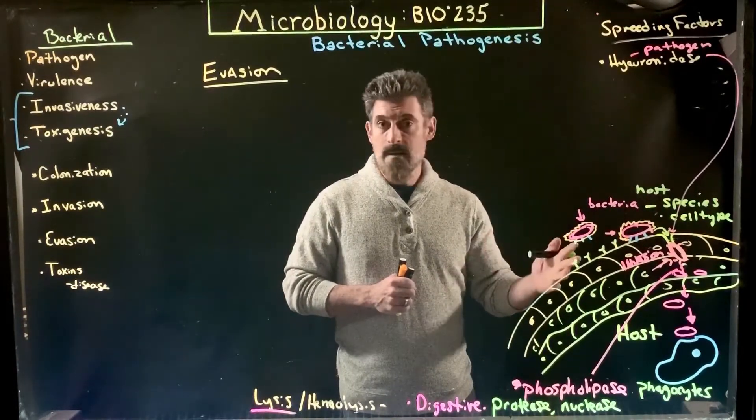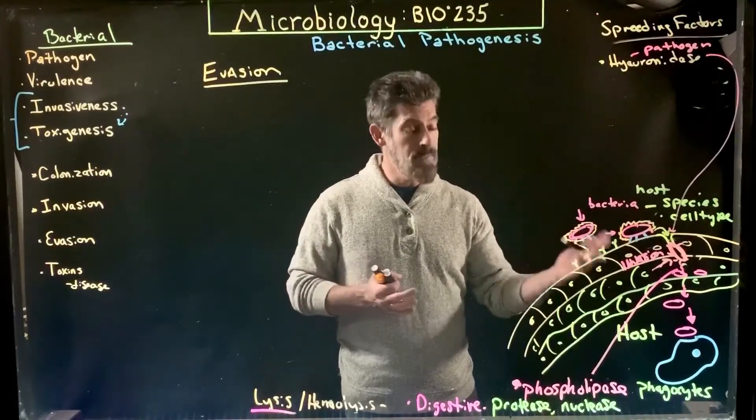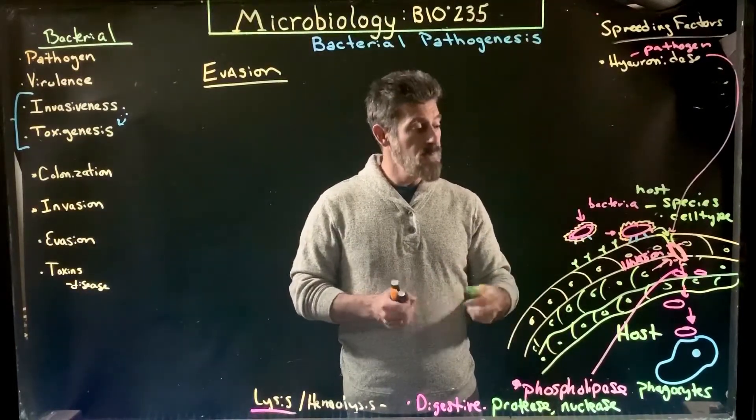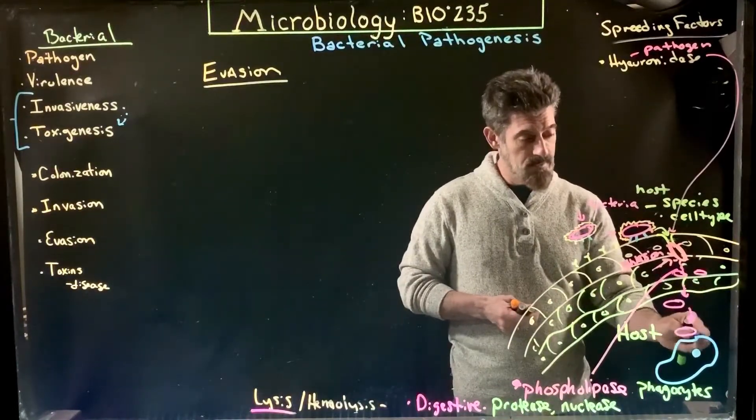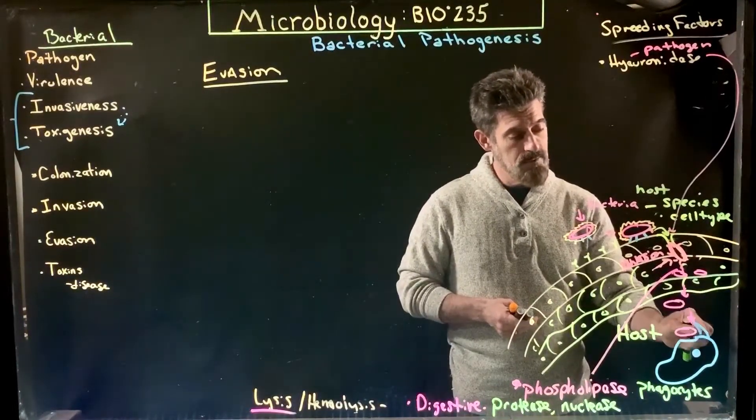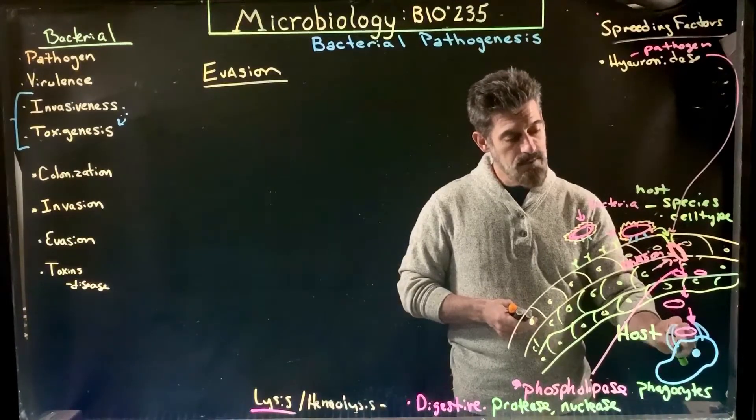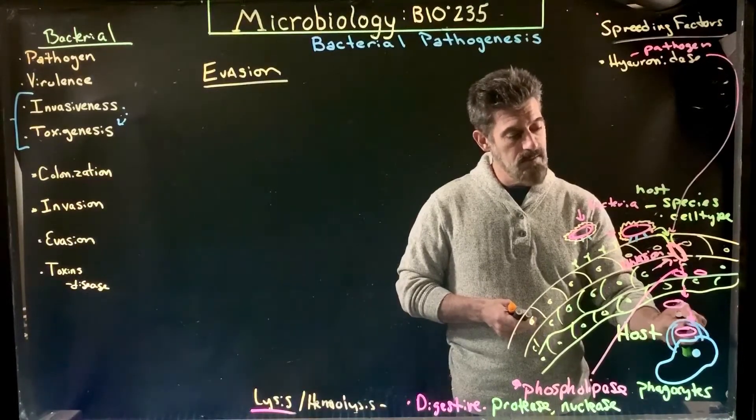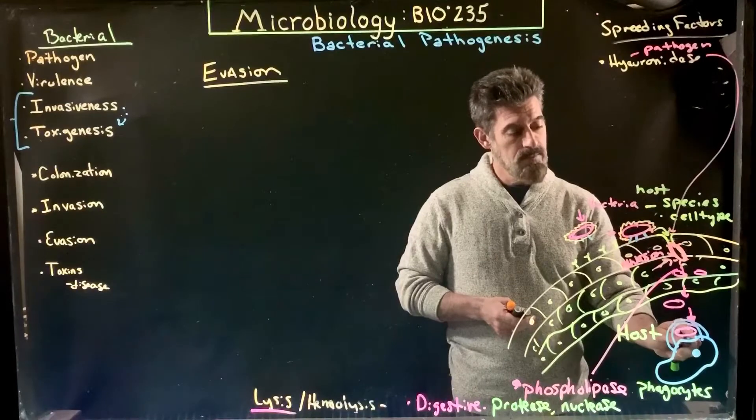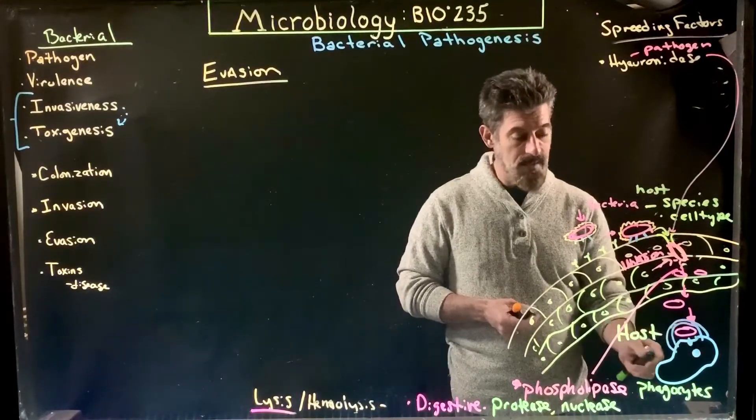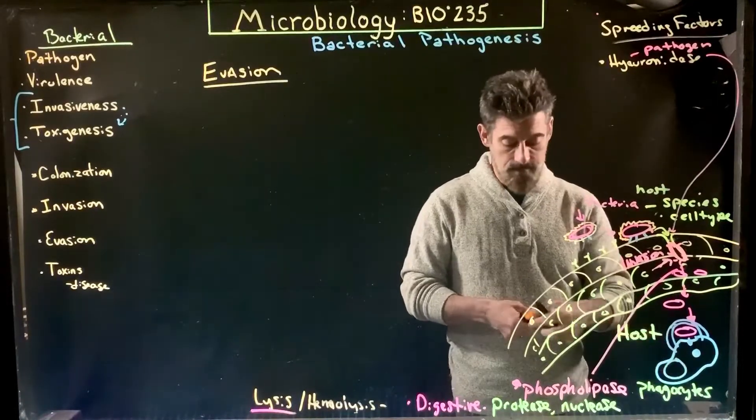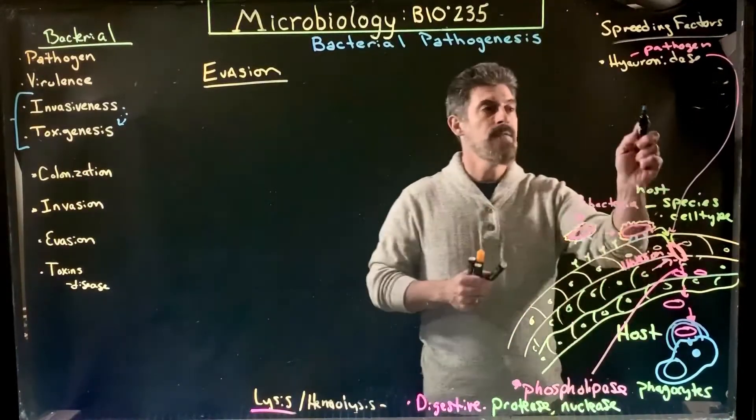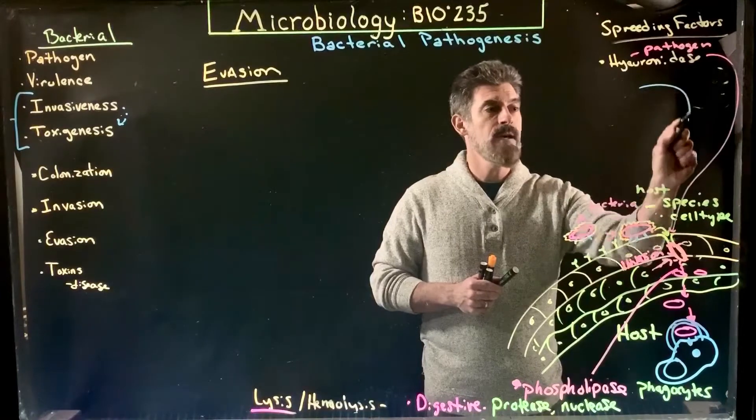But they can recognize things as typically being foreign, as not being part of you. What those cells are going to do is find those cells and then start to engulf them. Eventually they would make a vesicle around those foreign cells and pull them inside. So if this is the phagocyte...